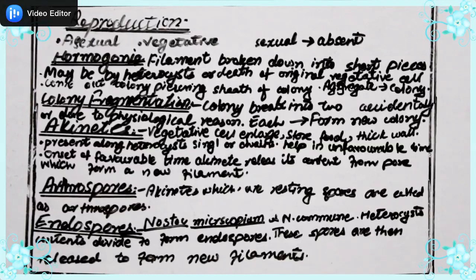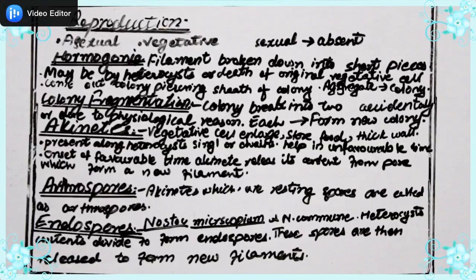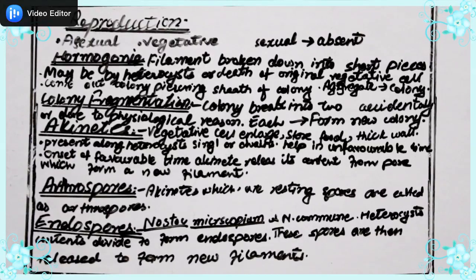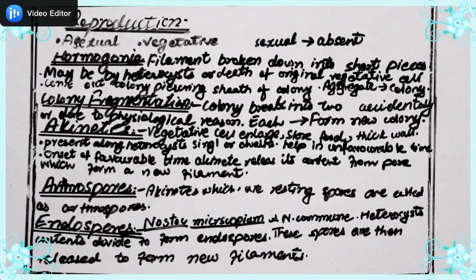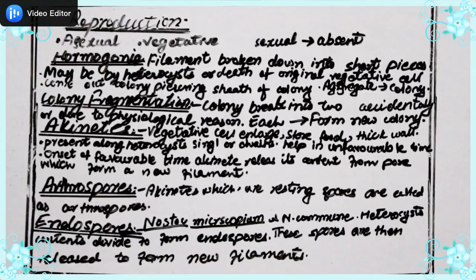The third method is akinetes, also known as resting spores. Vegetative cells get enlarged and separate from the filament. They are present near the heterocyst and form under unfavorable conditions for protection and survival. When favorable conditions return, they separate from the heterocyst, release their material in the form of filaments, and new spores give rise to new filaments. Akinetes may be present singly or in chains alongside the heterocyst.